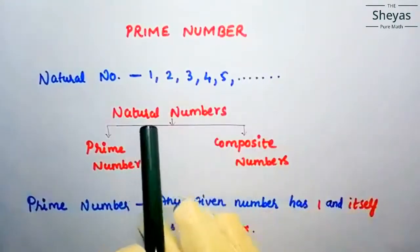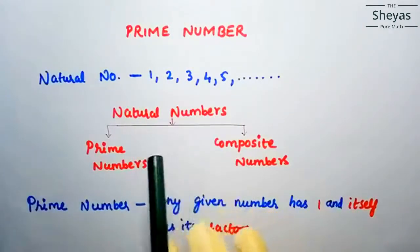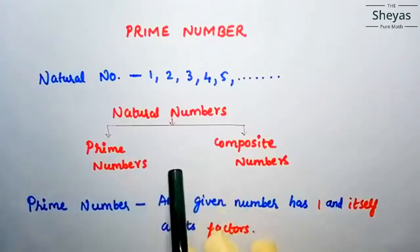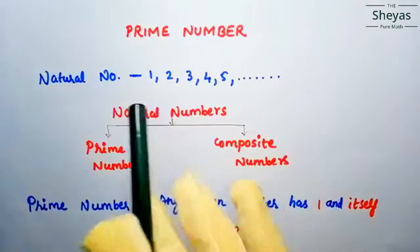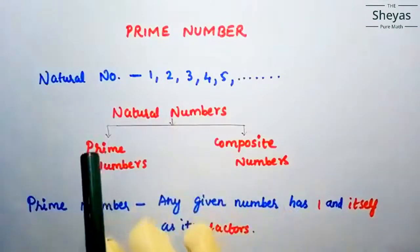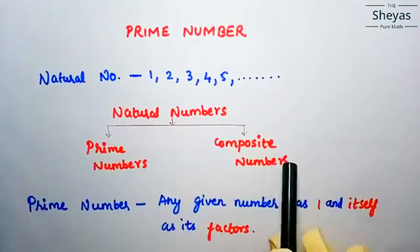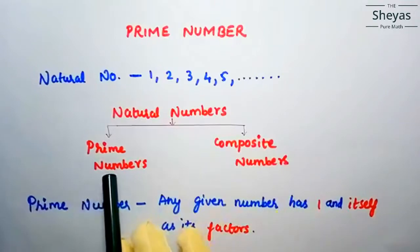Now we are going to discuss prime numbers. Natural numbers are divided into prime numbers and composite numbers. So let us see prime numbers first.